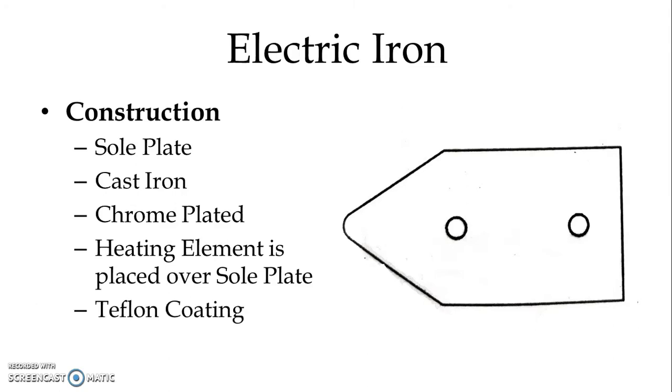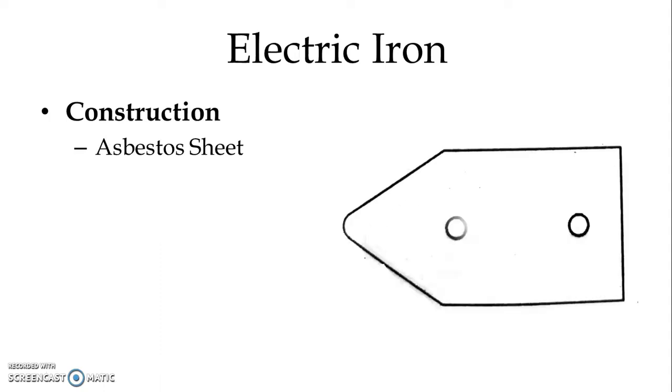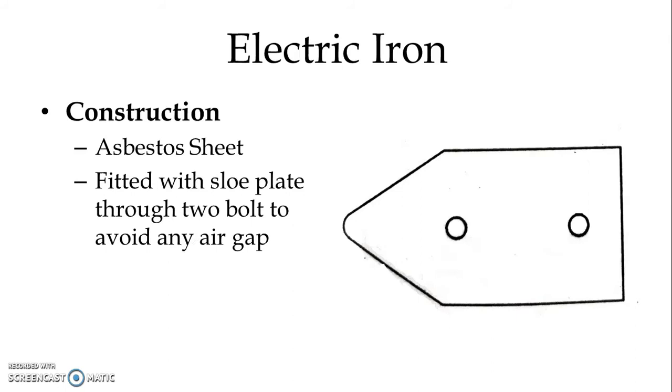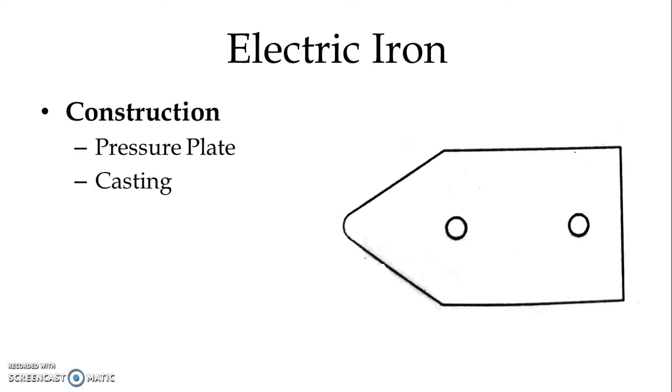In modern iron now it is Teflon coated. Asbestos sheet above the heating element, we use asbestos sheet and that is fitted with the sole plate through two bolts to avoid any air gap or loose connection. And the topmost, that is a pressure plate, that is also normally made of casting.